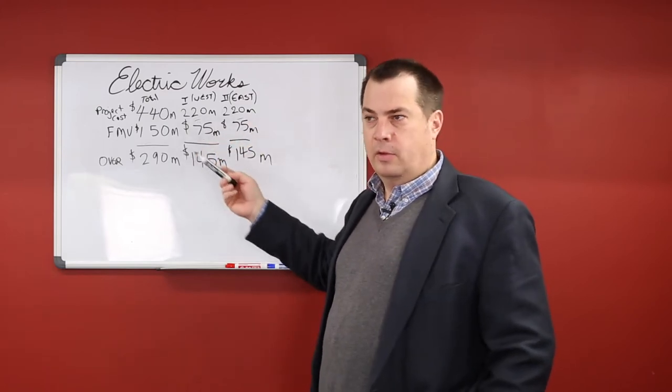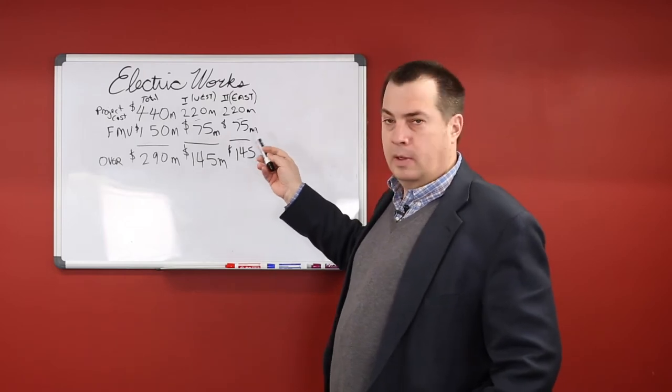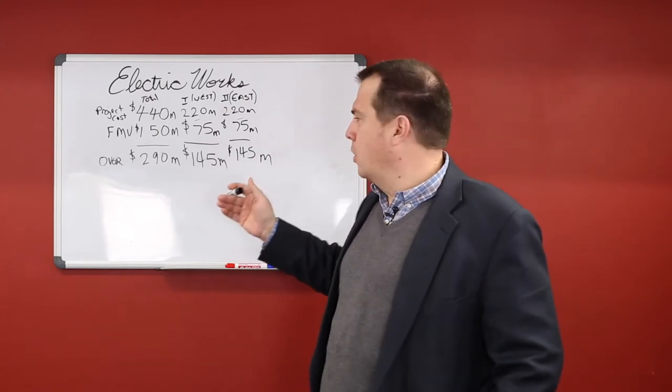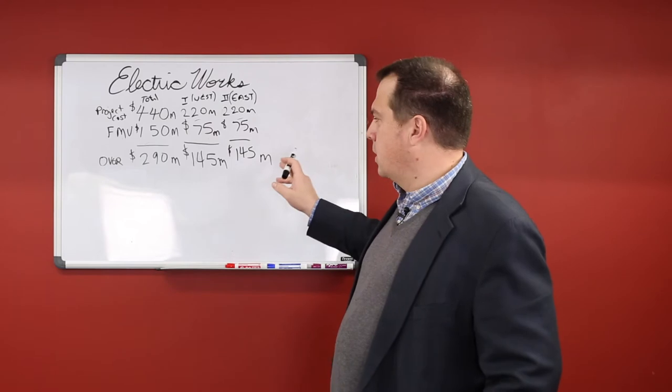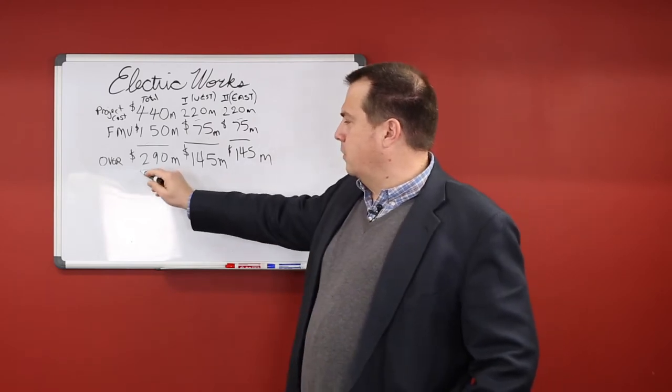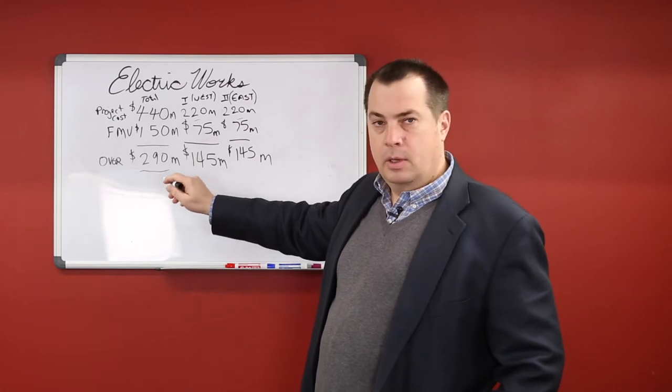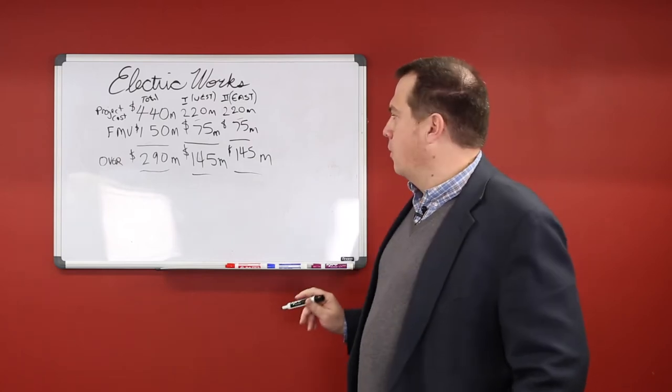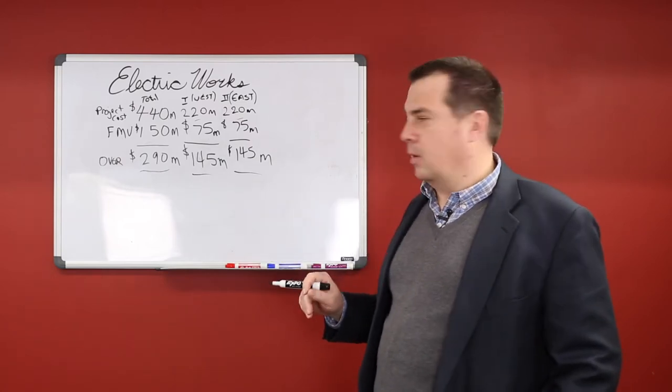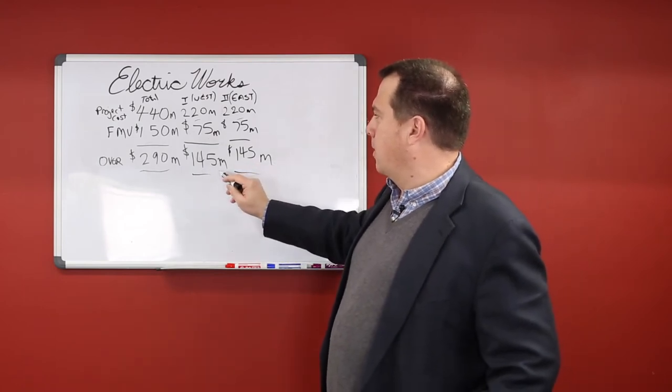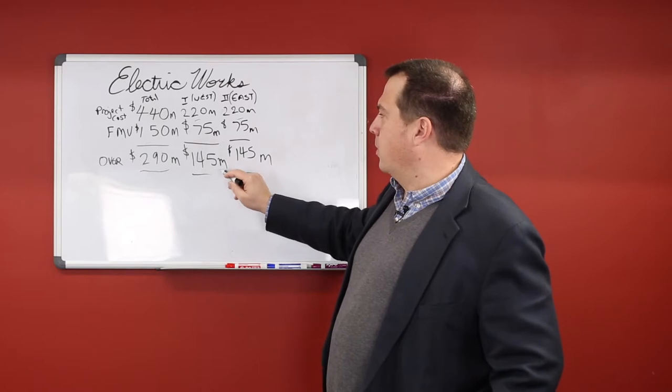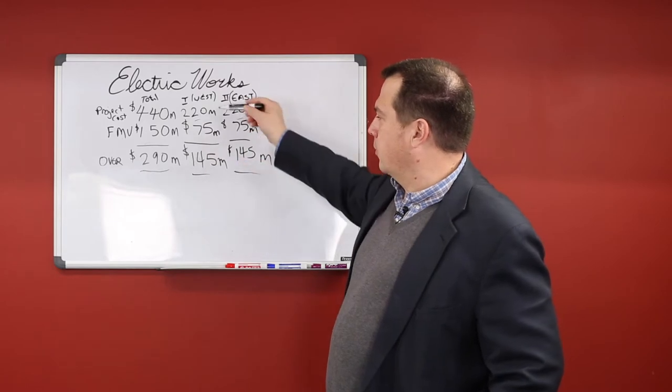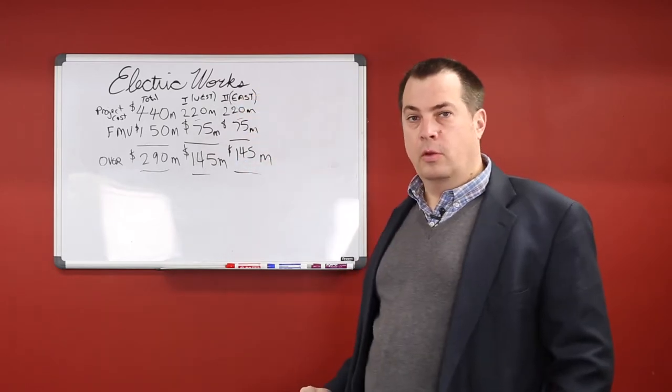And these numbers tie with the developer's spreadsheet, and the assessment numbers that they're coming up with on what the tax value would be are also similar to these numbers. So that still leaves us with a $290 million overpayment, and that is $145 million for each portion of the project that we're overpaying for. In other words, we're still close to that 3 to 1 ratio that we had talked about before.